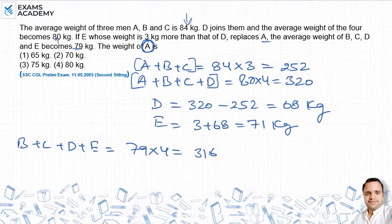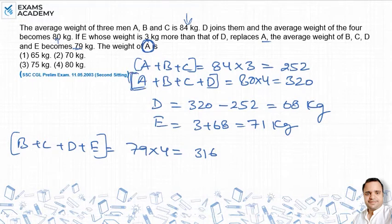B, C, D और E का total weight मिल गया 316. हमें A का weight find out करना है. इस वाले total weight में से - B, C, D, E के total weight में से अगर हम A, B, C, D के total weight को minus कर दें, तो B, C, D तीनों terms common हैं, बच कौन सा रहा है - A और E.